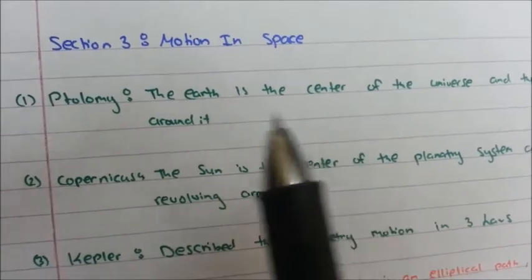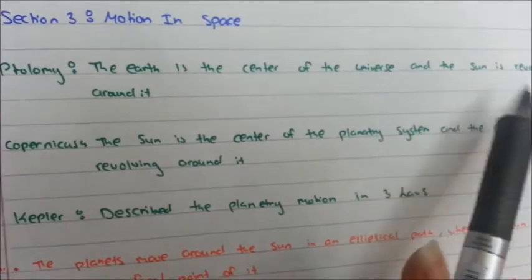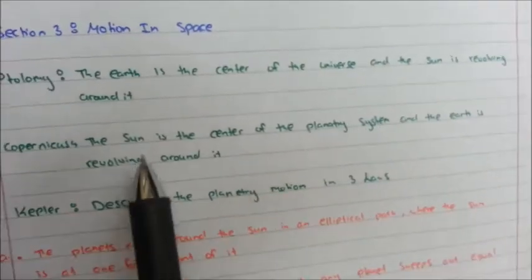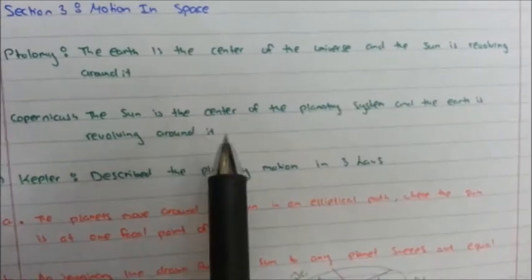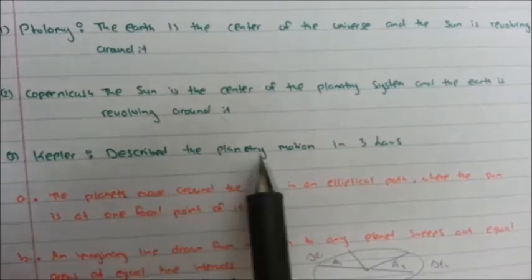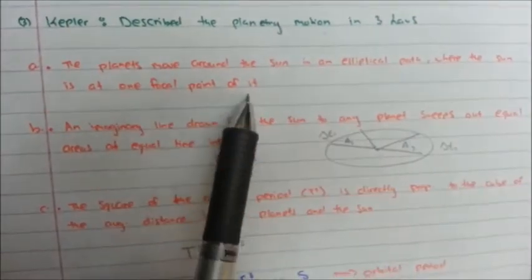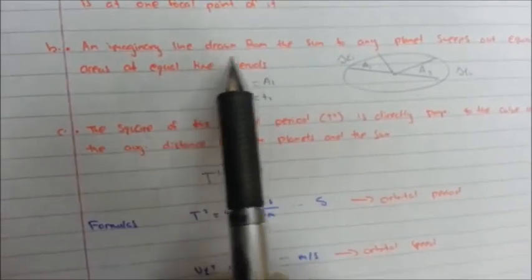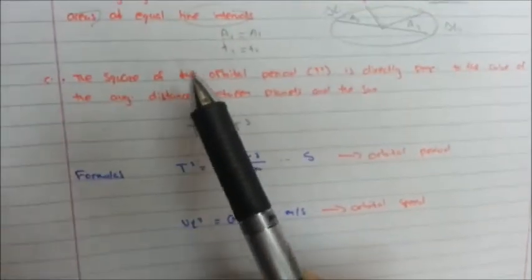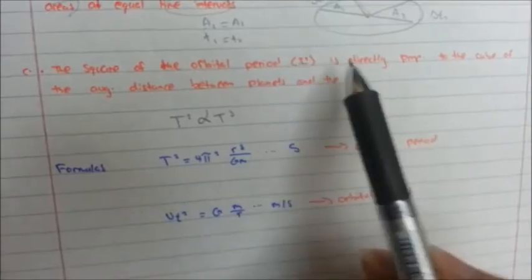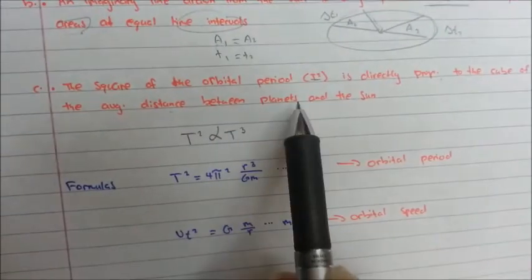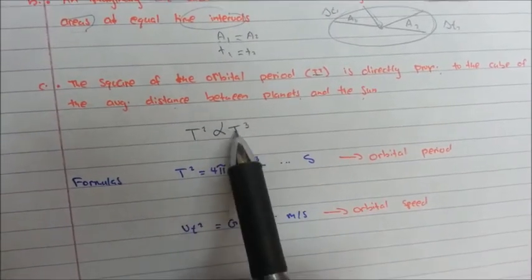Our third lesson will be talking about motion in space. Ptolemy said the Earth is the center of our universe and the Sun revolves around it. Copernicus said the Sun is the center of our planetary system and the Earth revolves around it, which is correct. Kepler described planetary motion in three laws: the first states planets move in an elliptical path with the Sun at one focal point; the second states an imaginary line from the Sun to any planet sweeps equal areas in equal time intervals, so area 1 equals area 2 and T1 equals T2; the third states the square of the orbital period T² is directly proportional to the cube of the average distance between the planet and the Sun.